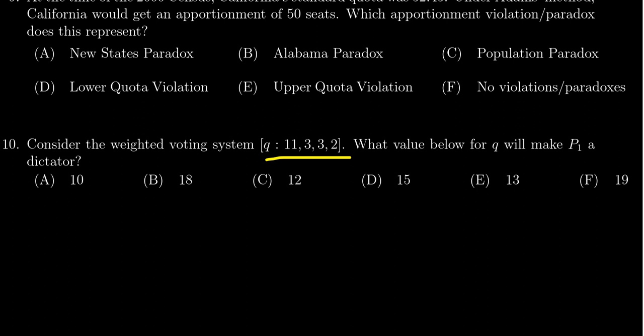And we're asked which quota Q, because we don't know what it is yet, will make player 1 into a dictator. As in, player 1 is the only player with any power whatsoever that every winning coalition has player 1 on it, and no one else.